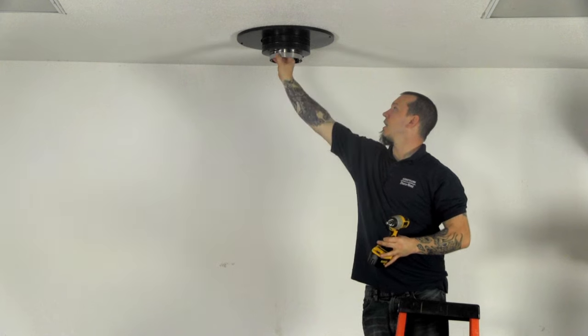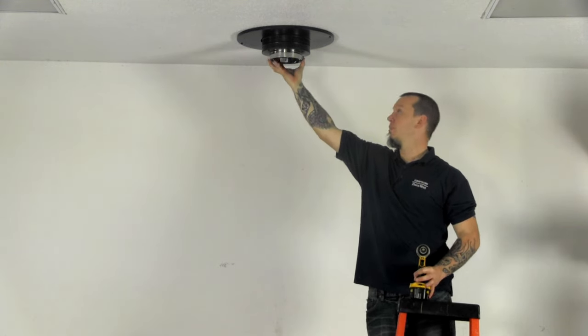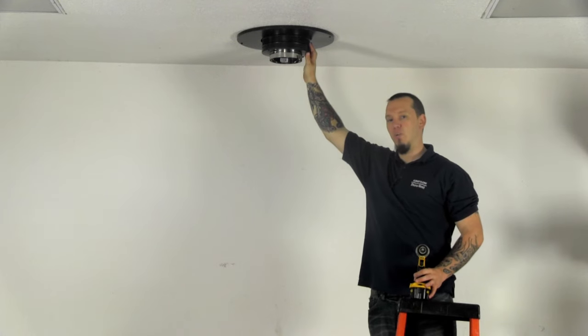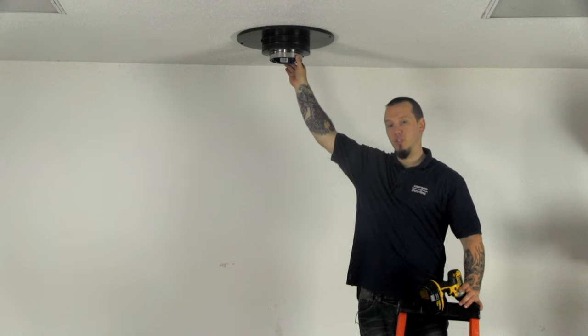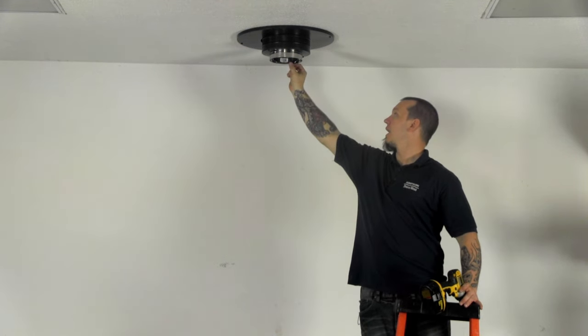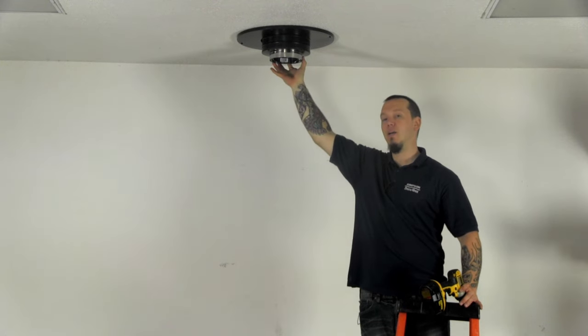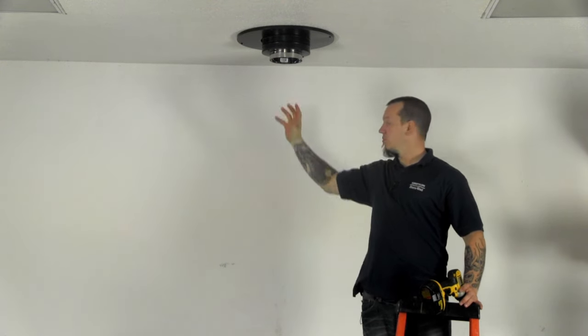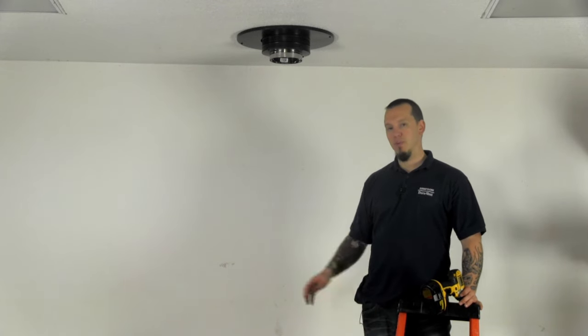Okay this should be nice and snug now and that's going to make a nice secure connection from our single wall pipe into our class A double wall chimney pipe. So next we'll be connecting our two foot section of pipe. You might notice I situated the connector so that the seam is in the back. I like to alternate and keep the seams in the back so you've got a nice smooth surface on the chimney pipe for the front.